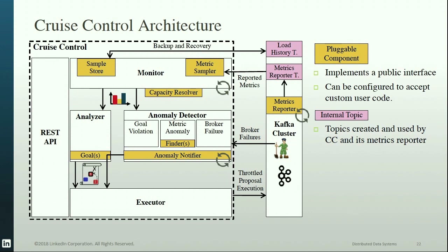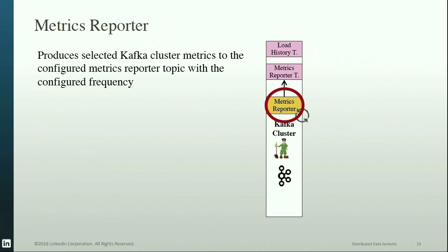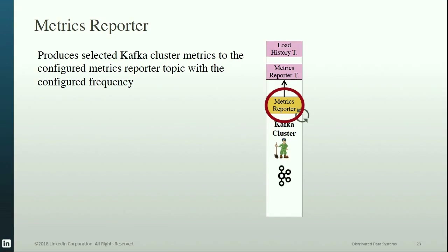The system consists of a monitor, an analyzer, an executor, a REST API, an anomaly detector, and the Kafka cluster itself. It contains a number of pluggable components — illustrated by orange rectangles — that enable users to customize their Cruise Control instance by implementing public interfaces. The pink rectangles indicate internal topics that Cruise Control and its metric reporter use. The metric reporter is a pluggable Kafka component that reports a selected set of Kafka metrics to a metric reporter topic at a certain frequency.